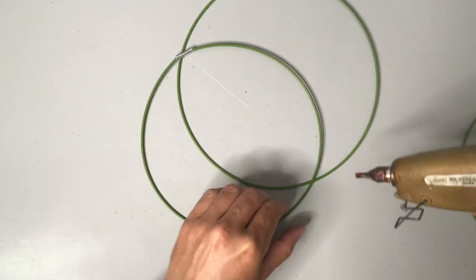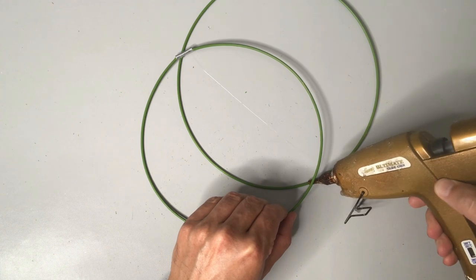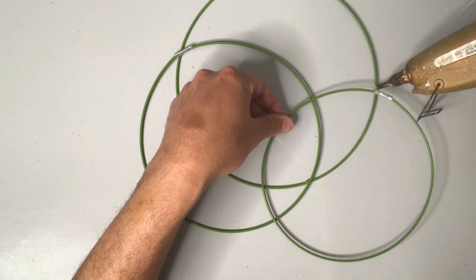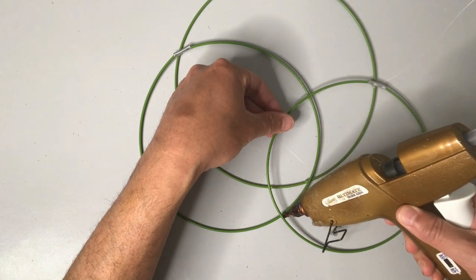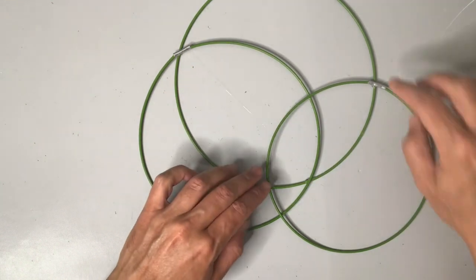I'm going to use some hot glue to simply put them into place just as I want them to, and then I'm gonna use some twist ties to securely fasten them down.